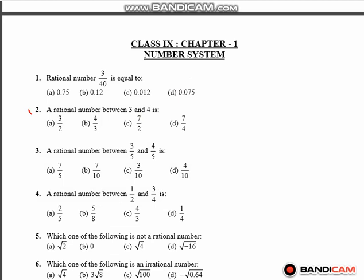The next question: a rational number between 3 by 5 and 4 by 5. The correct option is 7 by 5. Because 3 plus 4 by 5 — there is 5 in the common place, and both denominators are already equal, so we don't need to make them equal. 3 plus 4 is 7, so the answer is 7 by 5, and option A is correct.